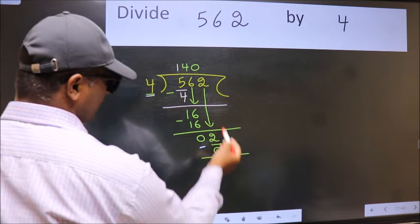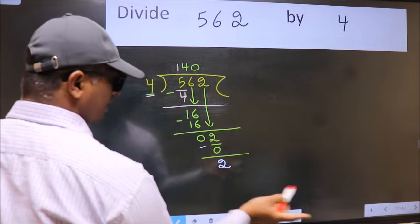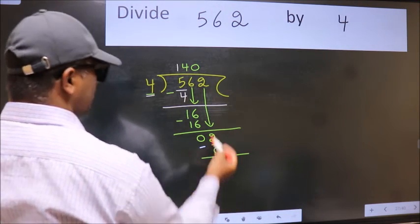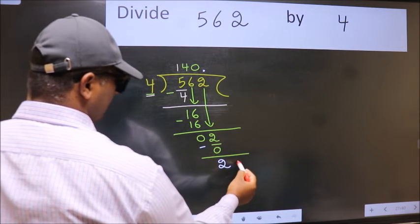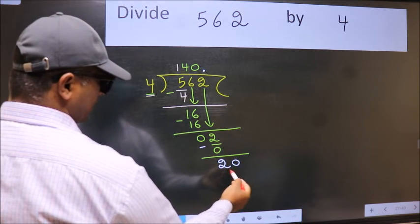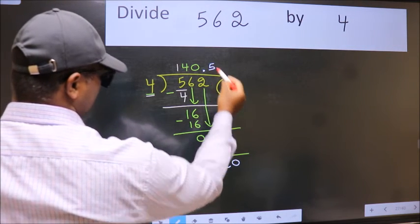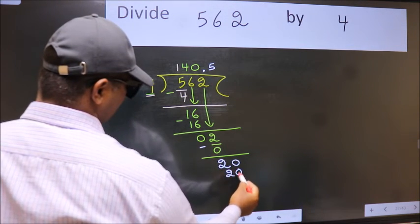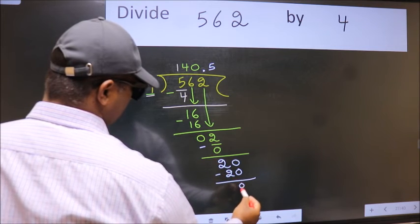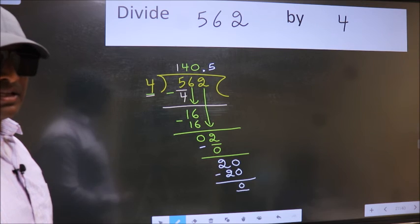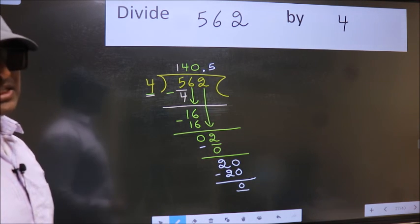Over here we did not bring any number down. And 2 is smaller than 4. So now we can put dot and take 0. So 20. When do we get 20 in 4 table? 4 fives 20. Now we subtract we get 0. Did you understand where the mistake happens? You should not do that mistake.